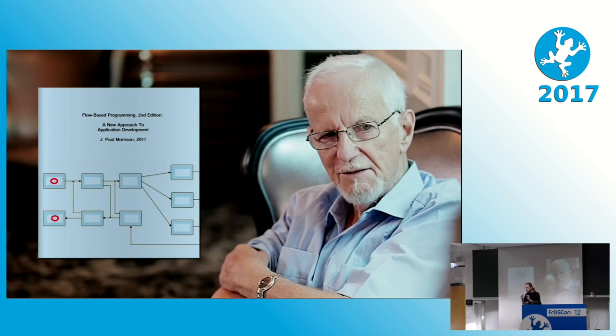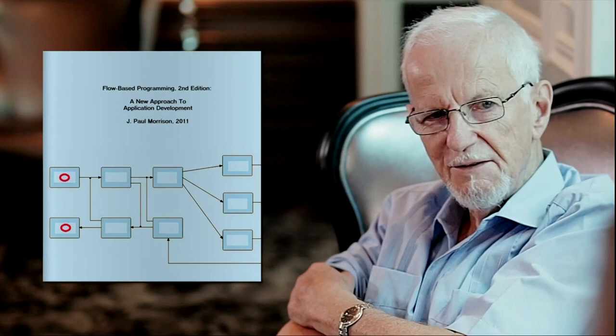Flow-based programming is a very cutting-edge new idea — Paul Morrison invented it in the late 60s and early 70s at IBM. When he retired in the 90s, he wrote the book about it, and he's also written implementations for Java and C#. I thought this 'boxes and arrows' method really fits with how I think about software, so I went on to implement a JavaScript version.